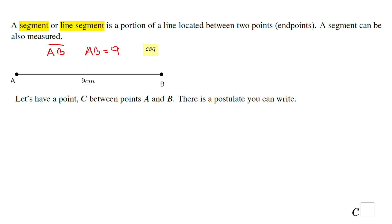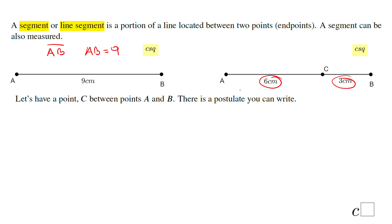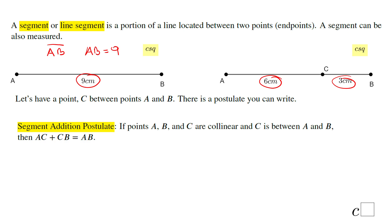Let's have a point C between points A and B. If you notice, this is 6 and this is 3. If we add these two guys, we get 9. So I think what we have here makes sense.